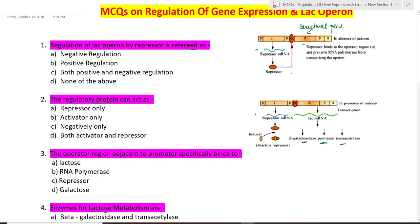First question: regulation of lac operon by repressor is referred to as — negative regulation, positive regulation, both positive and negative, or none of the above? The answer is negative regulation. It is called negative regulation because the repressor suppresses or inhibits the expression of structural genes Z, Y, A, which are required for lactose metabolism. These genes do not get expressed in the presence of the repressor. So option A is correct.